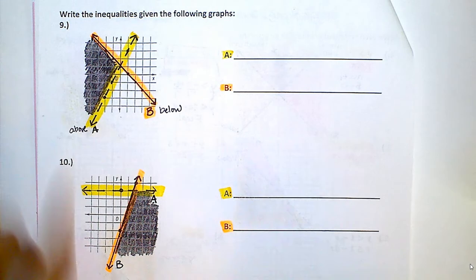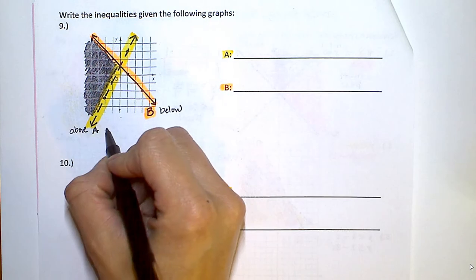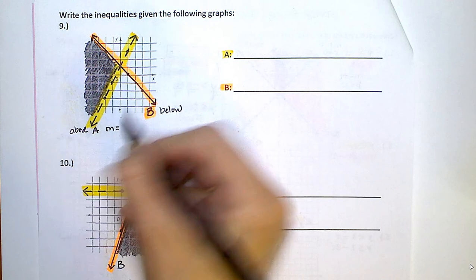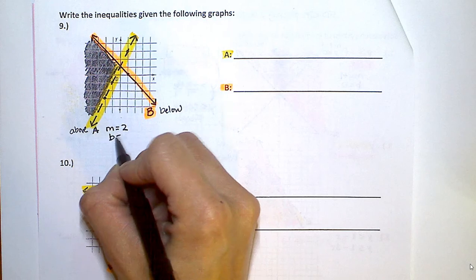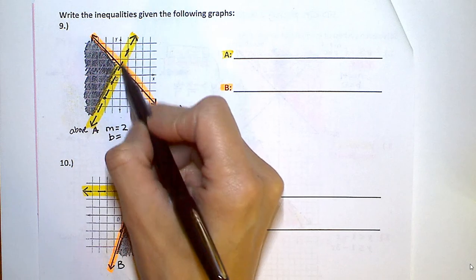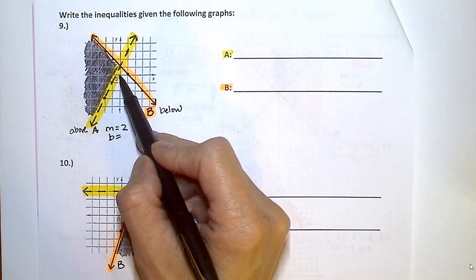Now for part A, I'm going to try to find my slope. So slope is going to be up 2 over 1. So slope is 2. My B, where I cross the y-axis, so this is 0, so it's going to cross right here at 1.